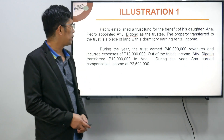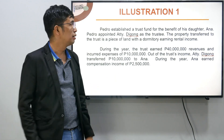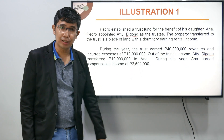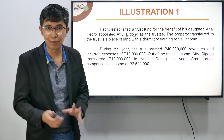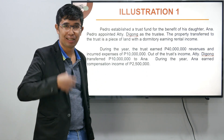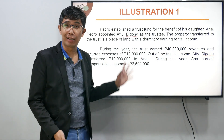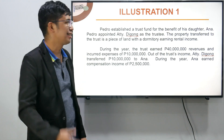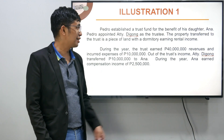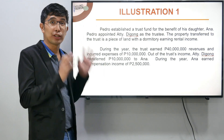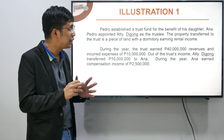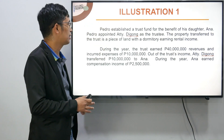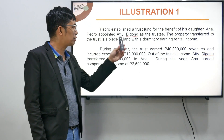Illustration number 1: si Pedro ay nag-establish ng trust fund para sa benefit ng kanyang anak na si Anna. Inappoint niya si Attorney as the trustee. So ang pagmamanage ng property si attorney, pero yung property na yun ay pag-aari ni Anna at ang nagbigay nun ay si Pedro — those are the three parties: the grantor, the trustee, and the beneficiary. The property transferred to the trust is a piece of land na may dormitory, so therefore it's earning rental income.